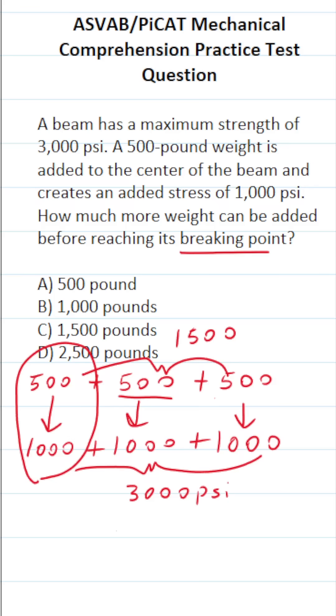Well, we added 500 and 500, or 1,000 additional pounds to the beam before it broke. So this one is going to be B.